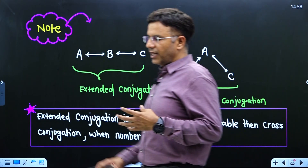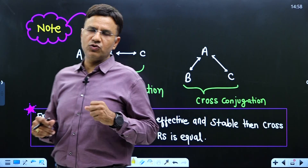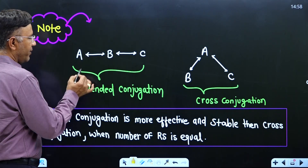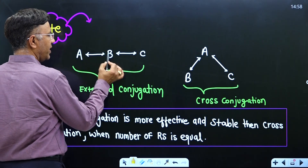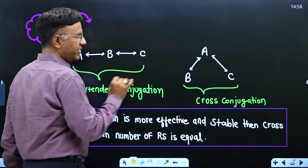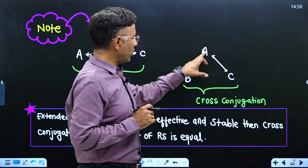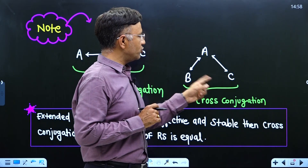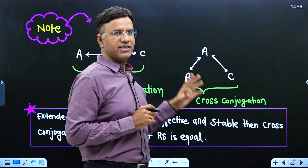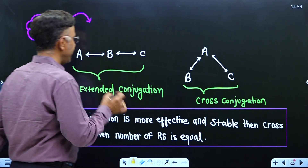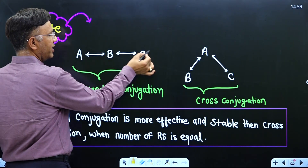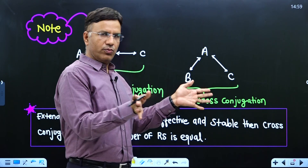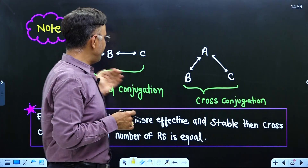There are two types of conjugation to remember. The first is extended conjugation: A is in conjugation with B, and B is in conjugation with C — consecutive. The second is cross conjugation: A is in conjugation with B and A is in conjugation with C, but B and C are not in conjugation with each other.